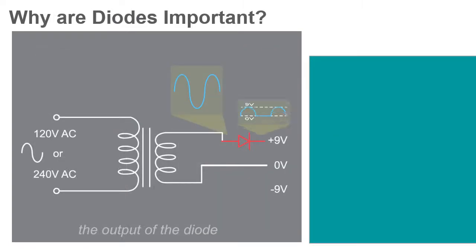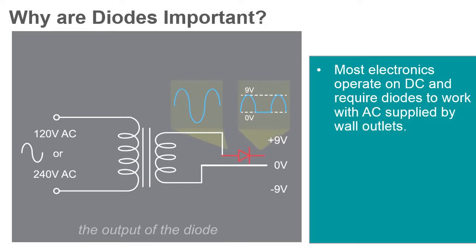The power that comes into our homes is alternating current, but most electronic devices within the home require direct current to function. Diodes are used to convert AC to DC and almost every device that plugs into a wall has them.